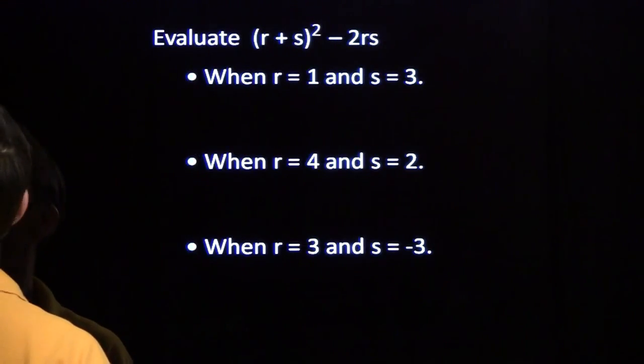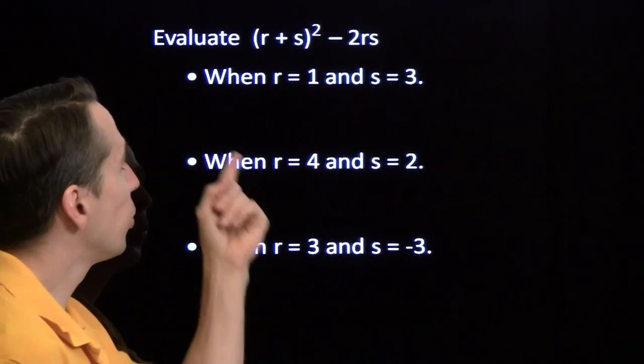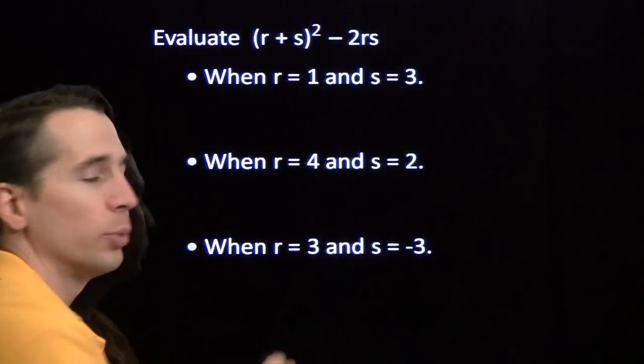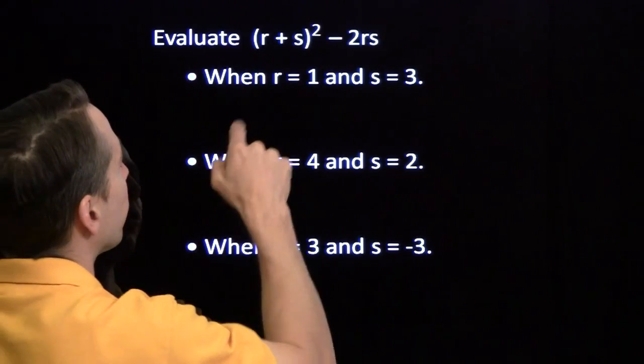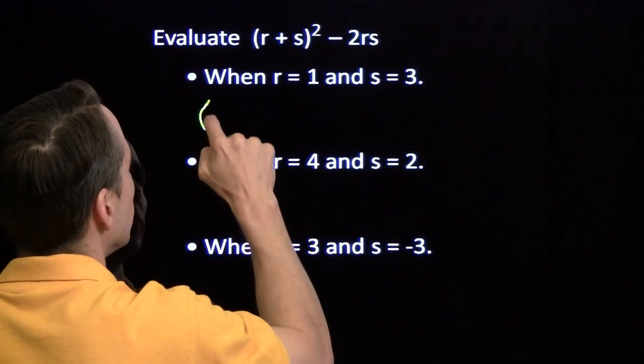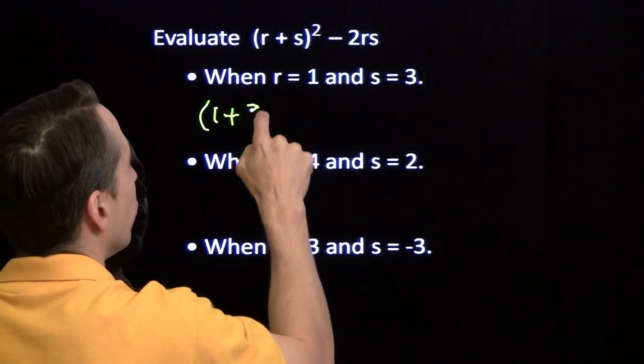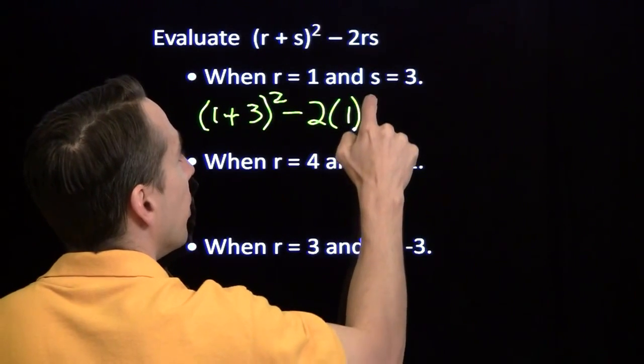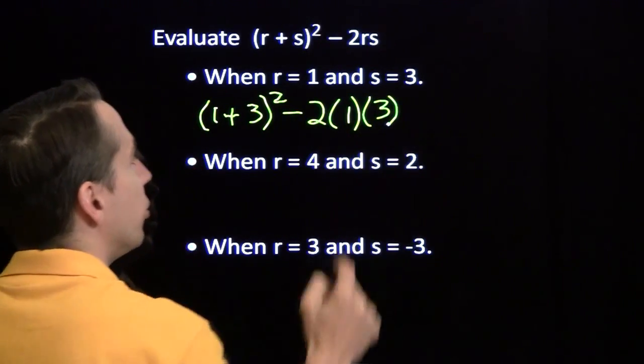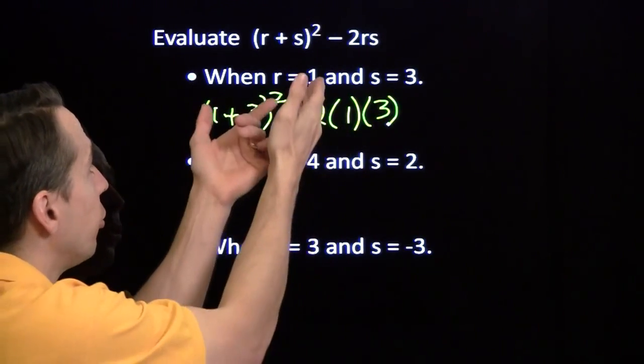All right, one more. We've got this expression. We're going to evaluate it at three different choices of values for these variables. We'll start with the first one. Once again, all I'm going to do is just write in the values first. I'm not going to do any arithmetic until I have all my substitution finished.